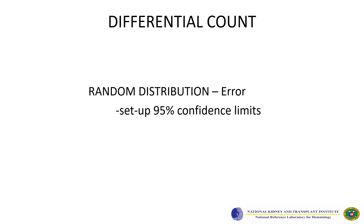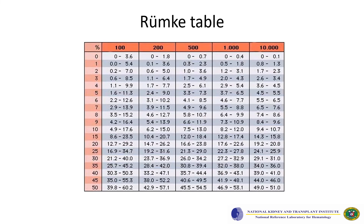Performance of the differential count is not free from errors. It is difficult to have perfectly identical differential counts done simultaneously due to the so-called random distribution error. It can be helpful to be aware of the 95% confidence limit on the difference from one count to another, and a table illustrates this.